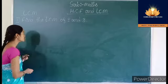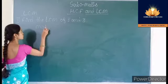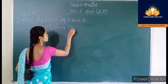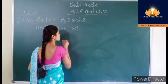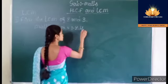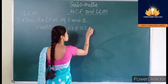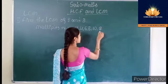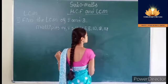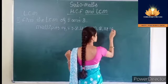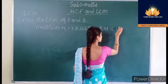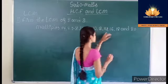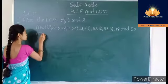Multiples of 2 and 3. Multiples of 2: 2×1=2, 2×2=4, 2×3=6, 2×4=8, 2×5=10, 2×6=12, 2×7=14, 2×8=16, 2×9=18, 2×10=20. These are the multiples of 2.